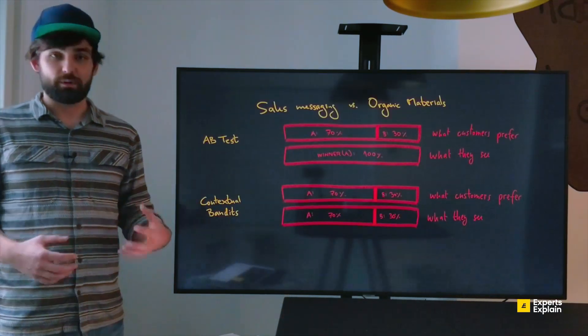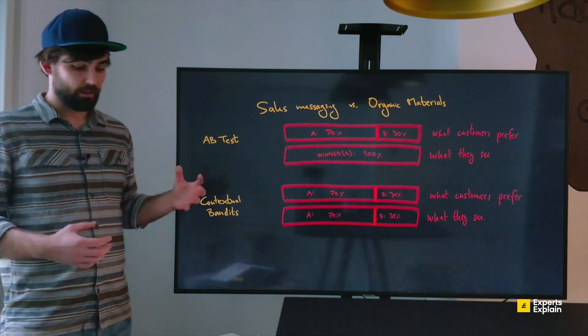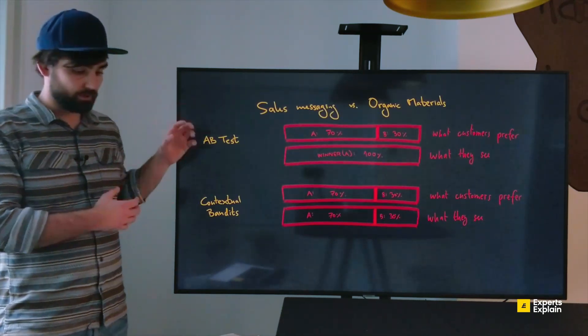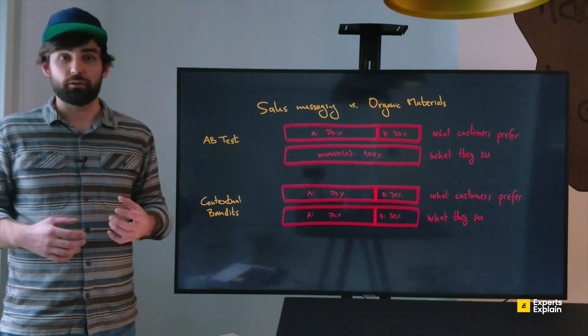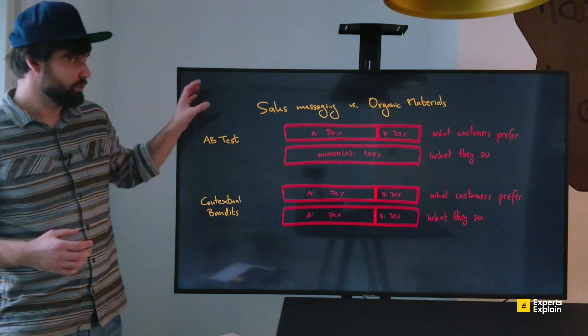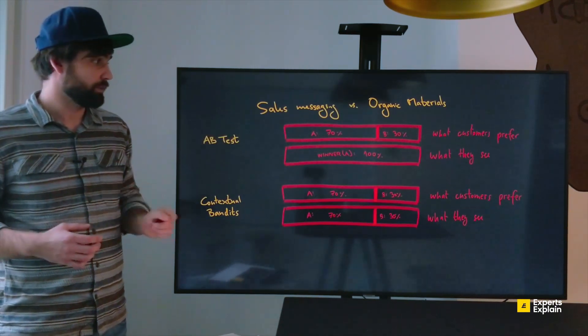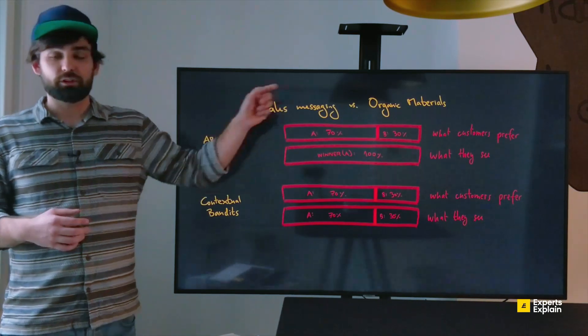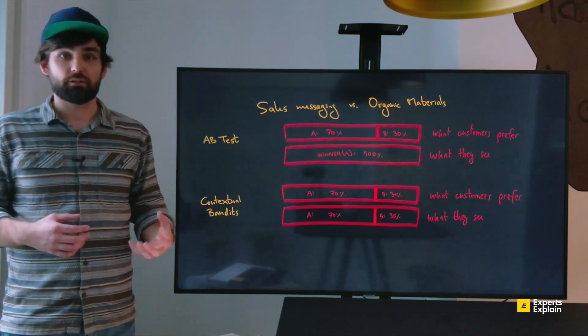Now what ends up happening however is that a significant portion of the customers see something they don't care about. Let's assume the previous scenario where 70% of the customers are interested in sales and 30% are interested in organic materials.